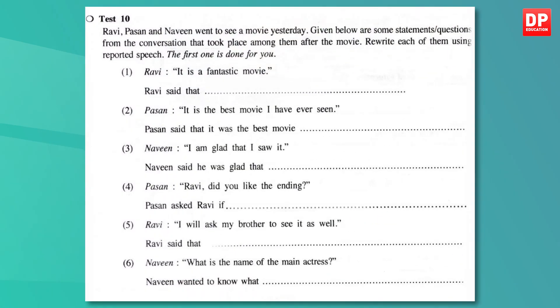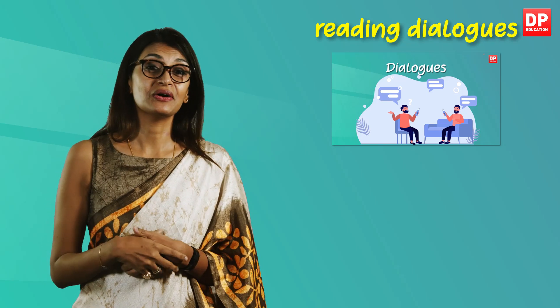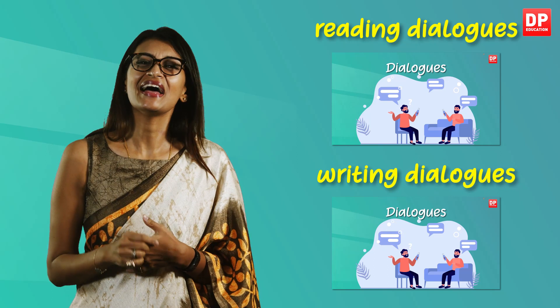Let's now move on to Test 10. Ravi, Pasaan and Naveen went to see a movie yesterday. Given are some statements or questions from the conversation that took place among them after the movie. You are asked to rewrite each of them using reported speech. The first one is done for you as a reminder of what reported speech is and how to use it. Reported speech is a way of telling someone what was mentioned by another person. Do watch our lesson on this topic for more detail.